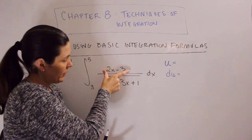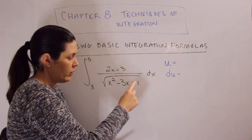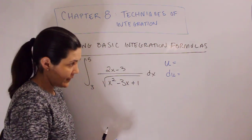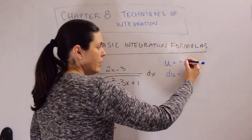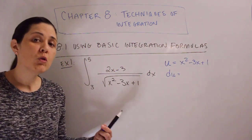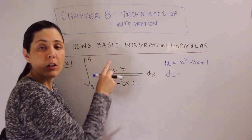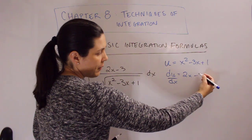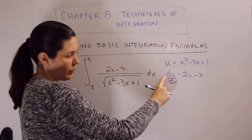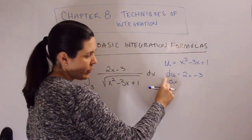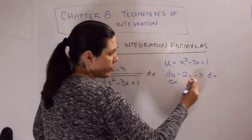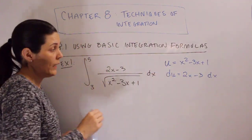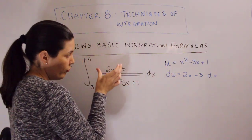We have a couple of options: we can pick the numerator 2x minus 3, we can pick the whole denominator including the square root, or the third option is just the radicand inside the radical. We should pick the radicand — x squared minus 3x plus 1. Here's why that was our best choice: the derivative of that choice is also here. The derivative of u with respect to x is 2x minus 3, and would you look at that — that's already right there. This is a really nice example where the derivative of our choice for u is very clearly present.